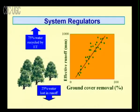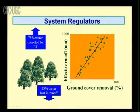When a whole habitat is fragmented, there is discontinuity in diversity, making habitat fragmentation another major threat. As a system regulator, 75 percent of water is recycled by evapotranspiration and 25 percent is lost in runoff. When groundwater is removed, effective runoff also increases — there is a direct correlation between groundwater removal and effective runoff. The more groundwater we remove, the more effective runoff occurs, and biodiversity is affected by these system regulators as well.